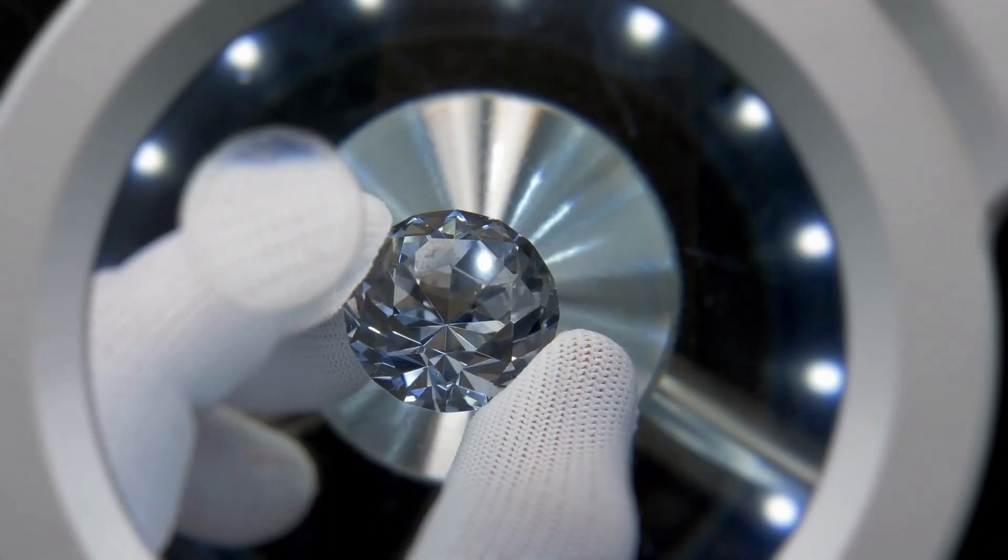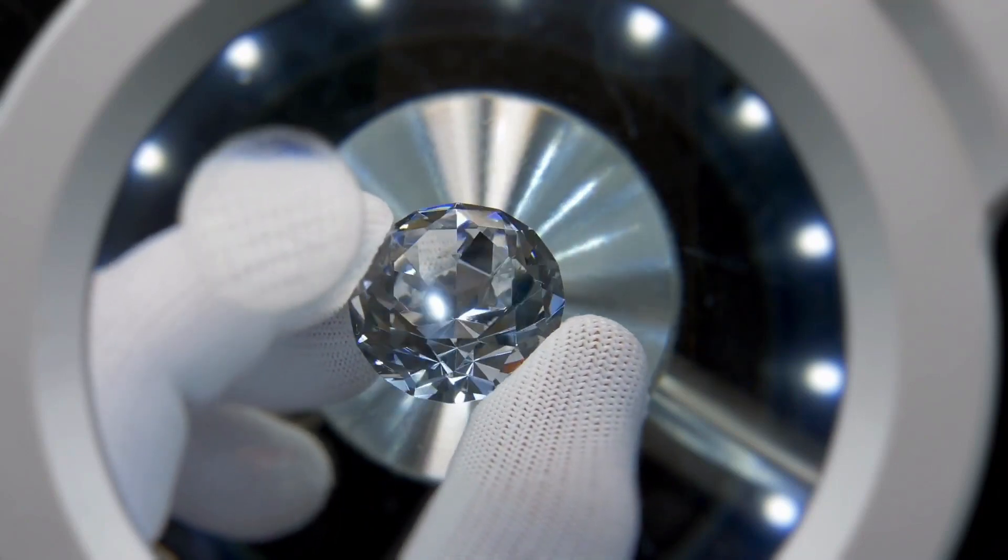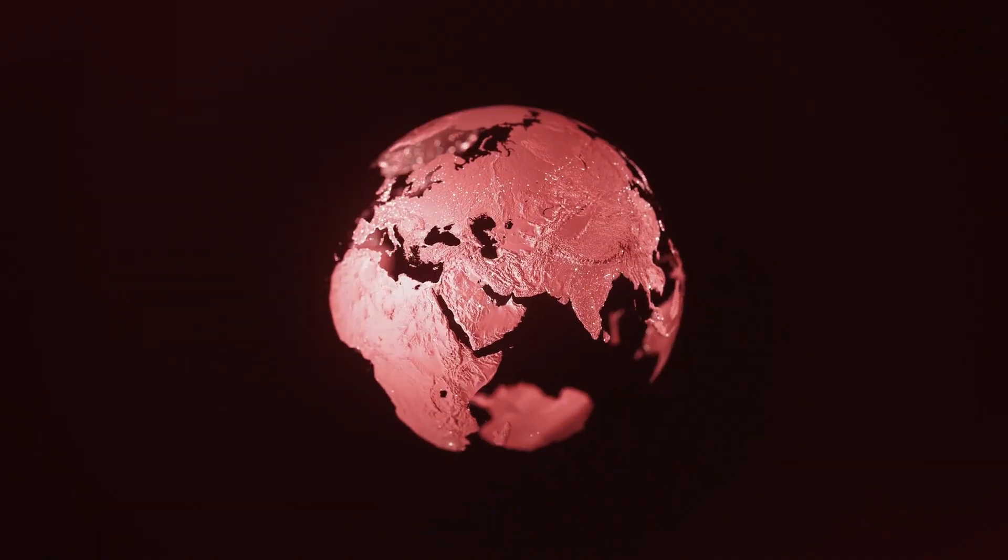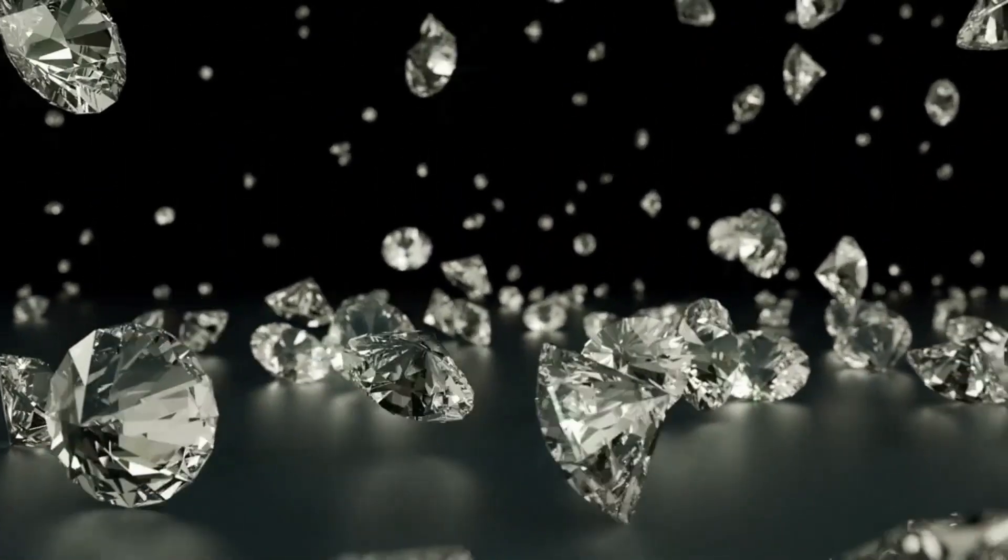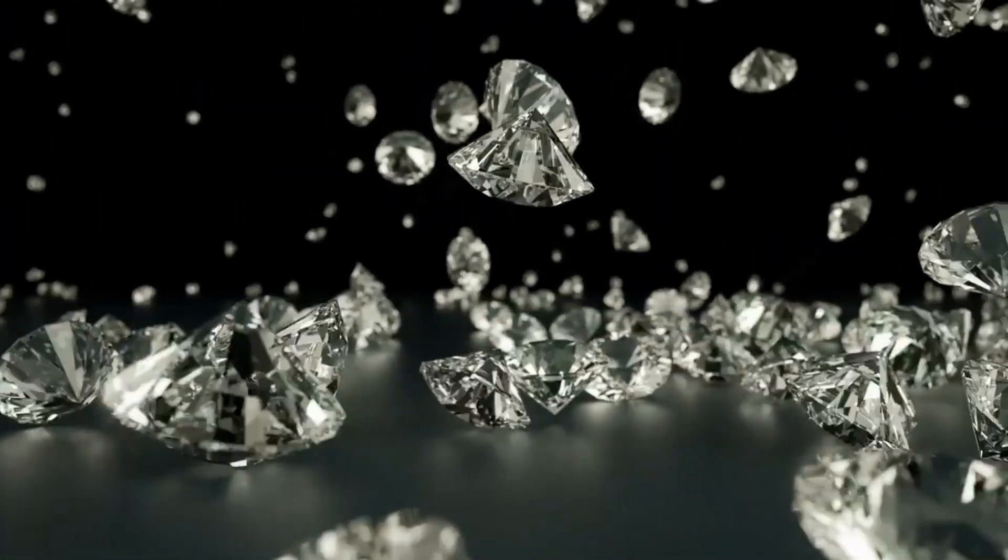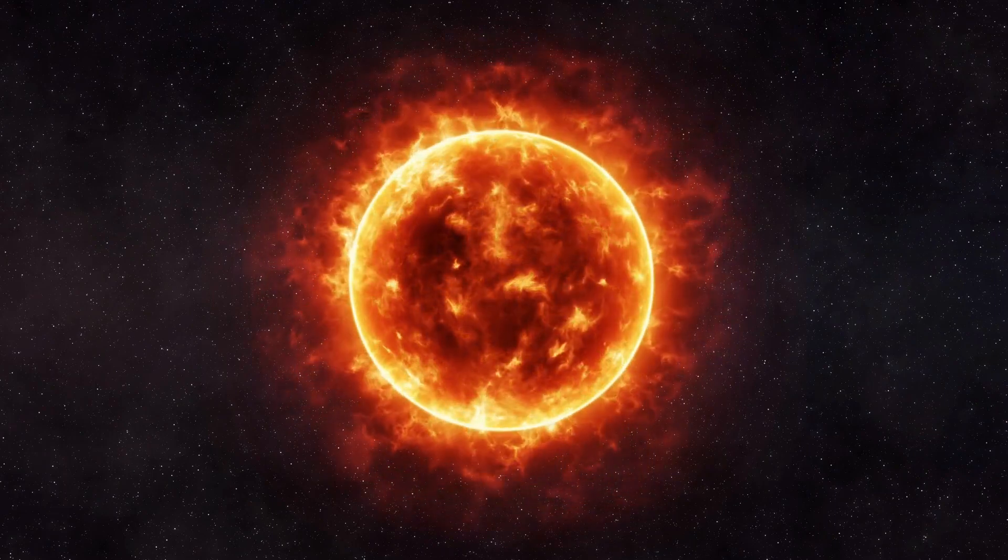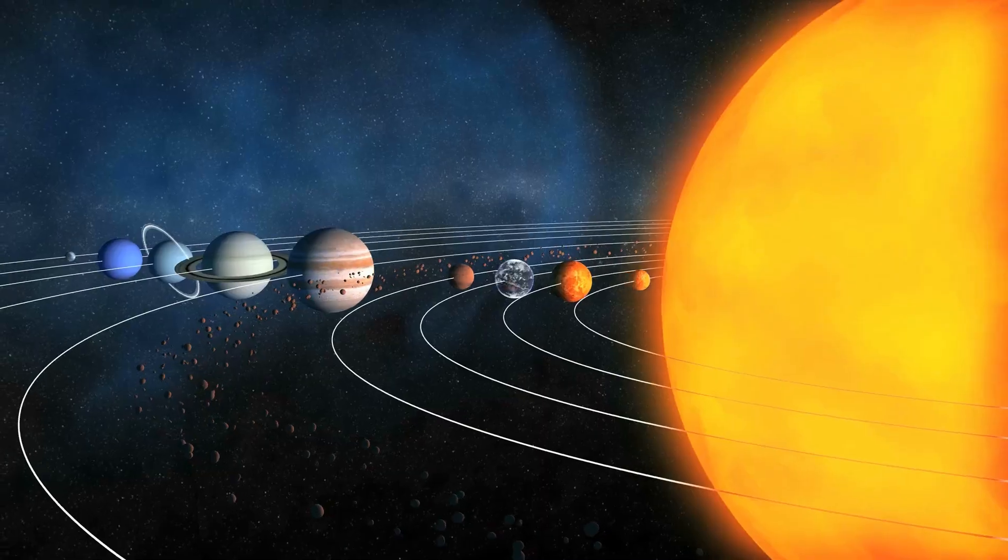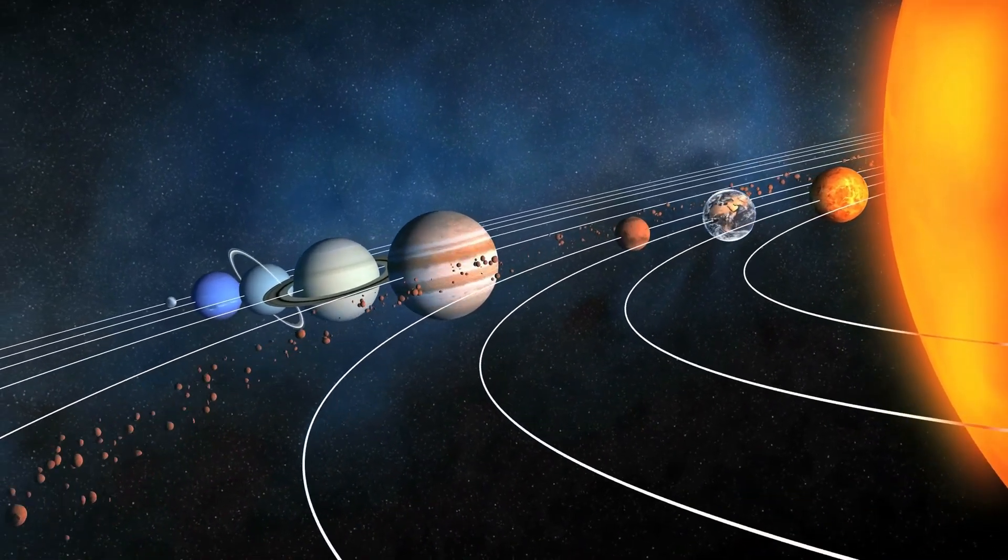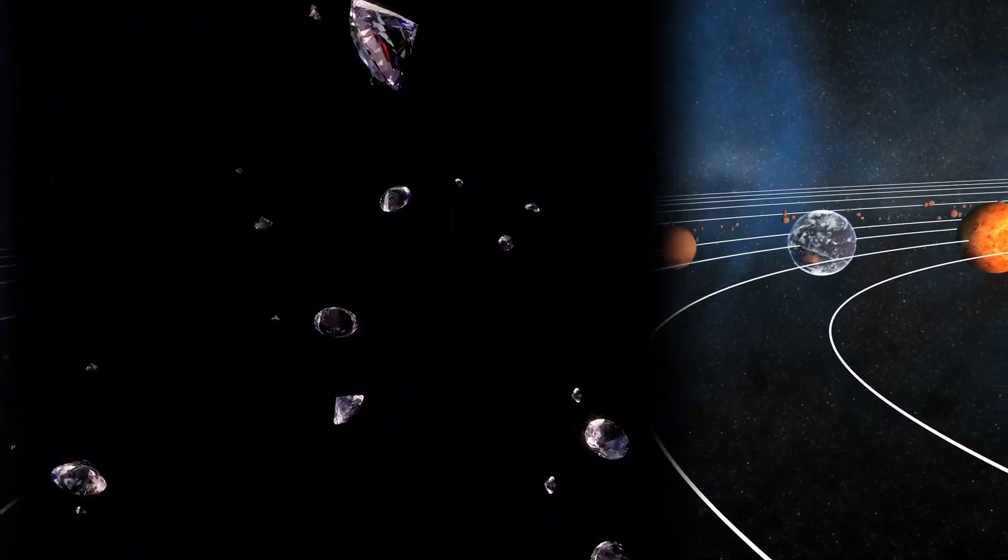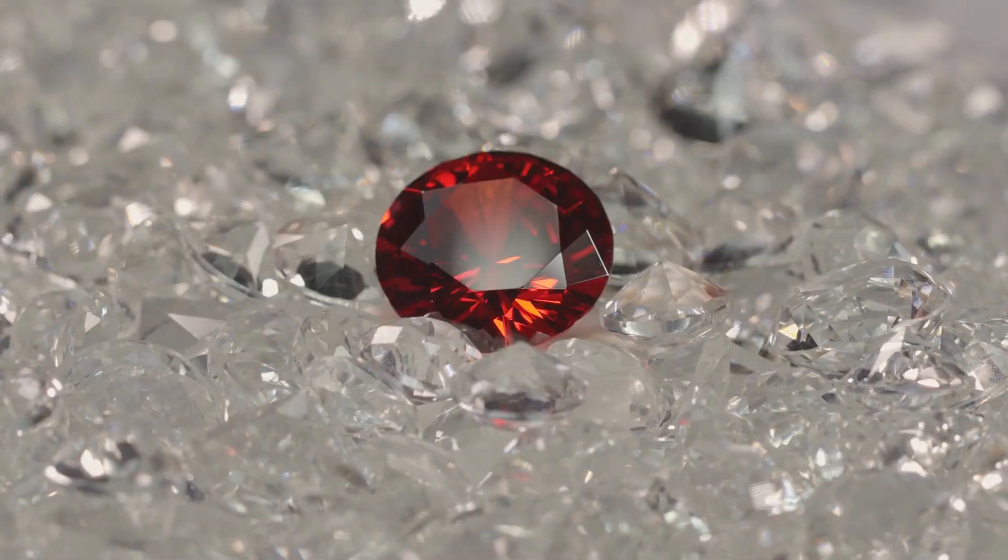Diamonds are made up of the element carbon, arranged in a crystalline structure called diamond cubic. On other planets with different environments, it's possible that diamonds could form and be brought to the surface in a variety of ways. One possibility is that diamonds could form in the upper atmosphere of a gas giant planet such as Jupiter or Saturn, where the atmospheric pressure and temperature are much higher than on Earth. If these diamonds were to collect, much like a raindrop, they could rain down through the cloud layers as solid diamond rain.